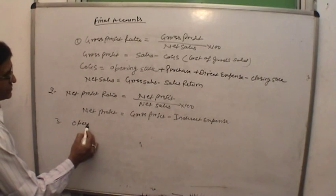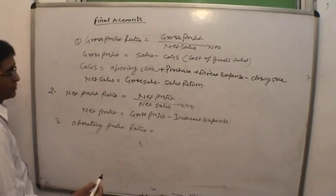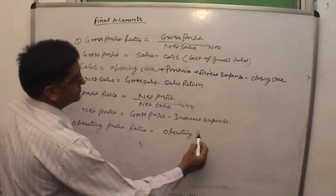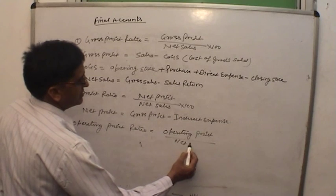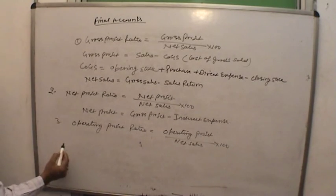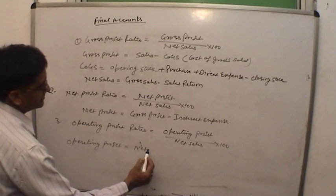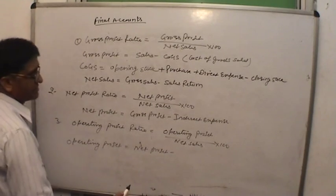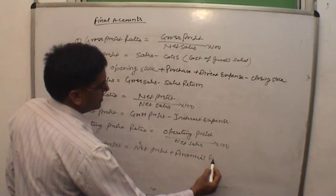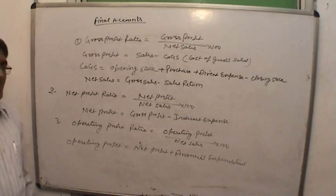Operating profit ratio equals operating profit divided by net sales, multiplied by 100. Operating profit equals net profit plus financial expenditure. Financial expenditure includes items like interest on capital, minus financial income.